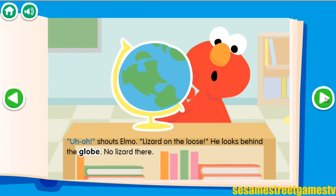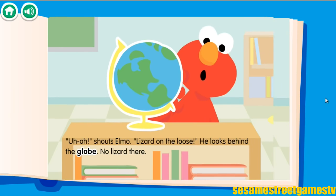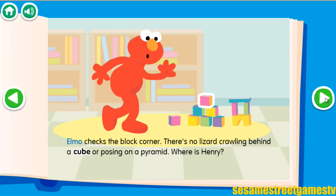Uh-oh, shouts Elmo. Lizard on the Loose! He looks behind the globe. No lizard there. Elmo checks the block corner. There's no lizard crawling behind a cube or posing on a pyramid. Where is Henry?